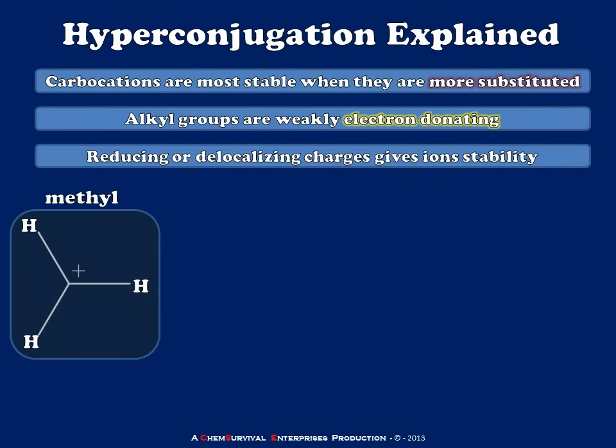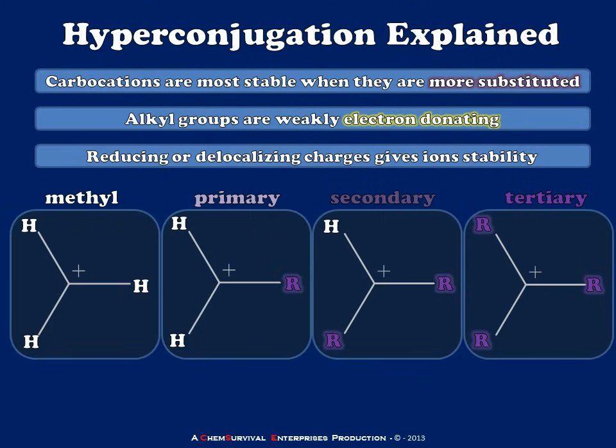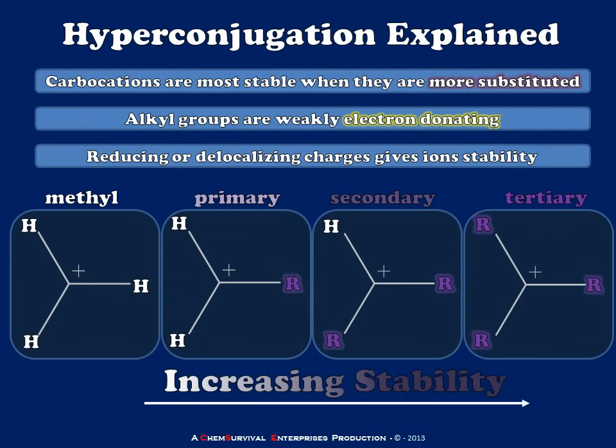So we expect methyl carbocations to be very rare because they're so unstable. Primary is not much better. But when we get on to secondary and tertiary carbocations, we see these constantly in organic chemistry. These are staples of first-order substitution and elimination reactions. And the reason is that those alkyl groups are increasing the stability of the carbocation.